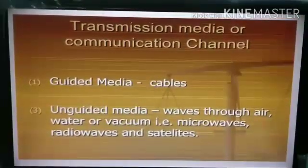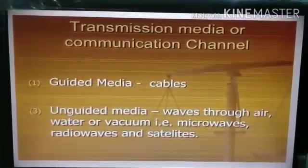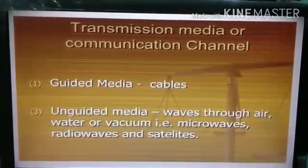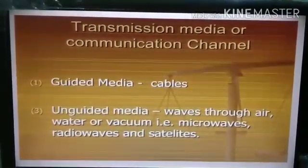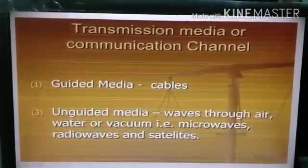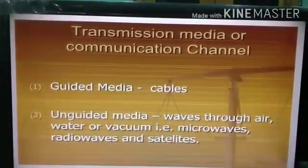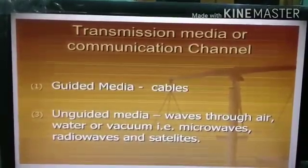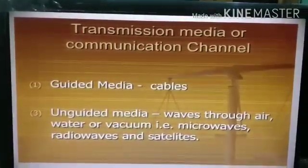Information we can transfer from one computer to another computer on internet by using two different ways. One is guided media, called cable medium. Second is unguided media — without cables — where we can use waves through air, like radio waves, microwaves, satellite links, Bluetooth, Wi-Fi.